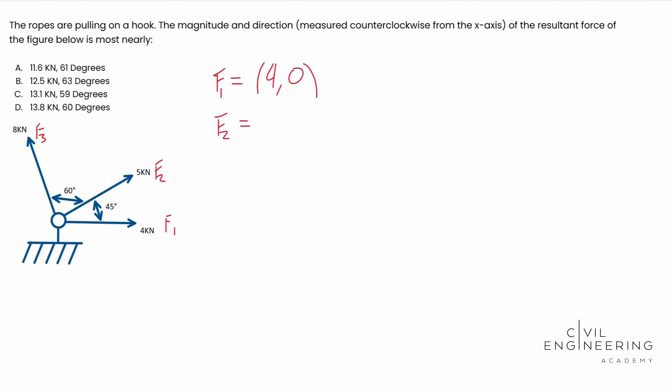For F2, we have five kilonewtons, but this time it actually does have a Y contributing to it as well as an X. So we're going to have to solve for that. We have to use sine, cosine, and tangent. We don't have to use tangent in this case, but we will have to use sine and cosine. Let's go ahead and get started with cosine.